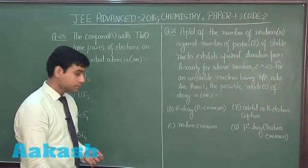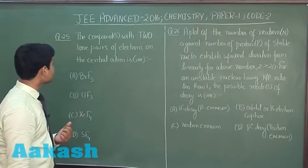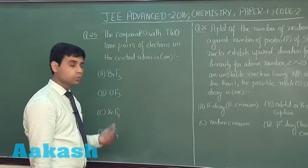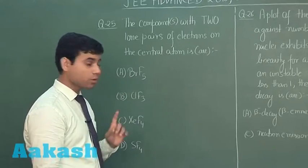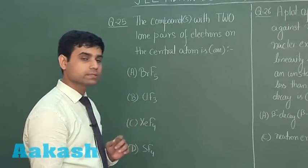So, these are the next questions. Question number 25 says the compound or compounds with two lone pairs of electrons on the central atom is or are.